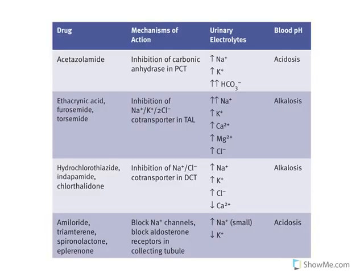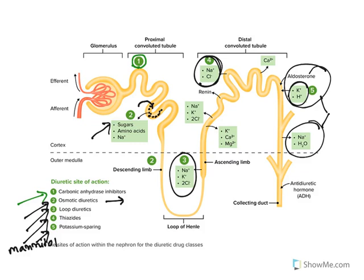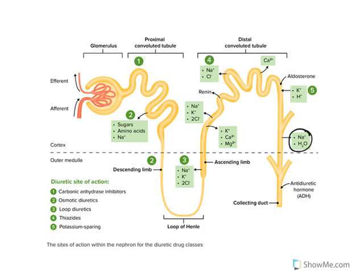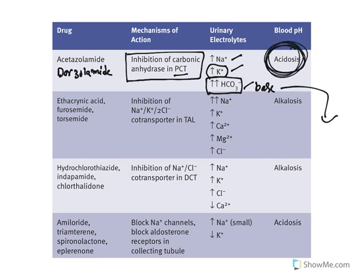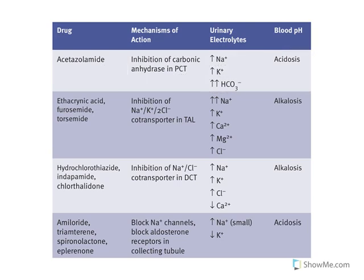Carbonic anhydrase inhibitors like acetazolamide, dorzolamide, and brinzolamide act at the proximal convoluted tubule and cause loss of sodium, potassium, and bicarbonate. Potassium is lost because sodium reaching the collecting duct gets reabsorbed with exchange of potassium. Bicarbonate is a conjugate base — when it is lost, blood pH becomes more acidic, causing metabolic acidosis.